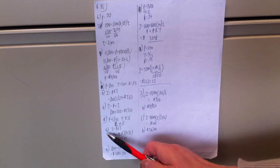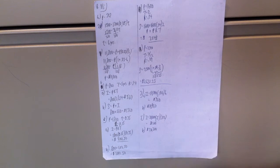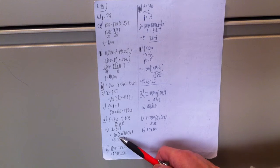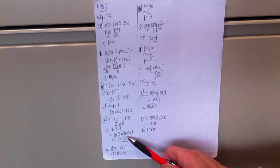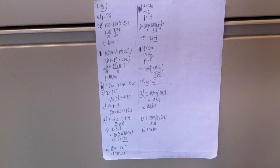I equals PRT. Interest equals principal times rate times time, which is 1800 times 0.15 times 0.75, 3 quarters of a year or 9 months. Comes out to be $202.50.